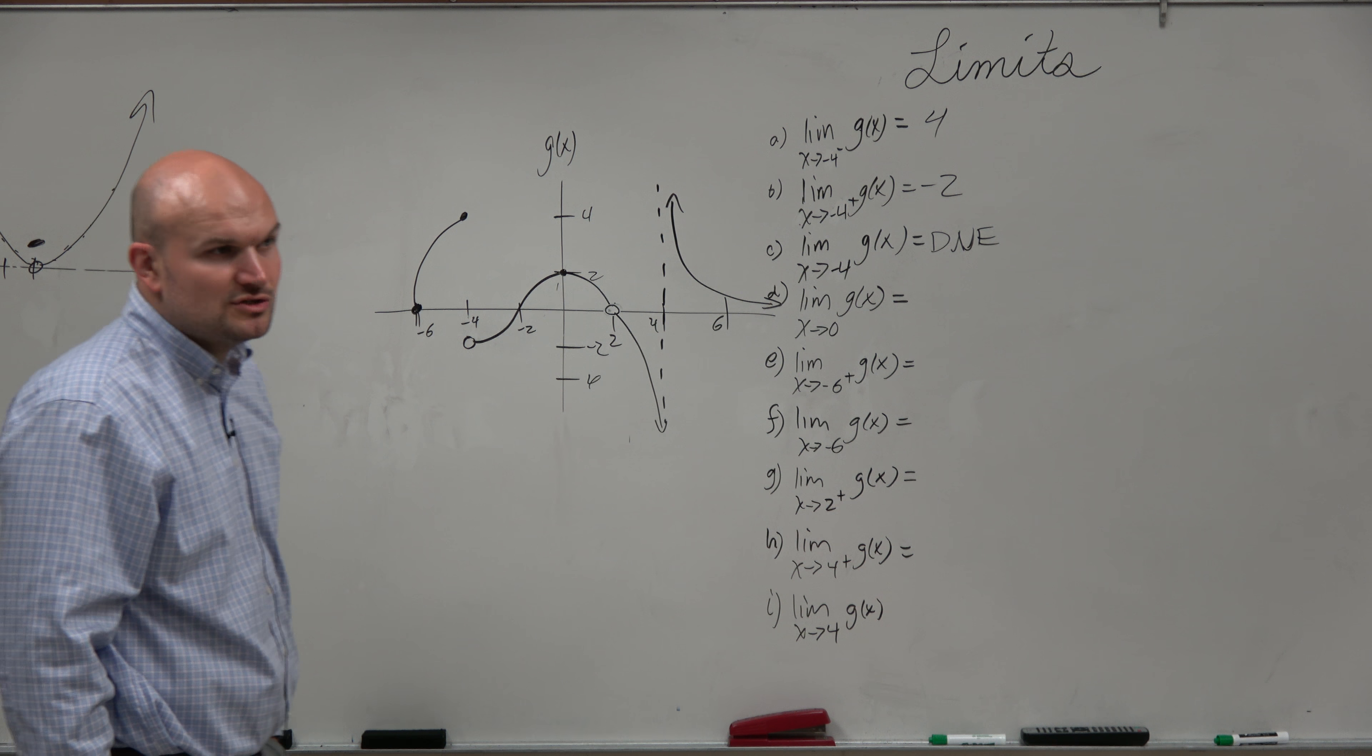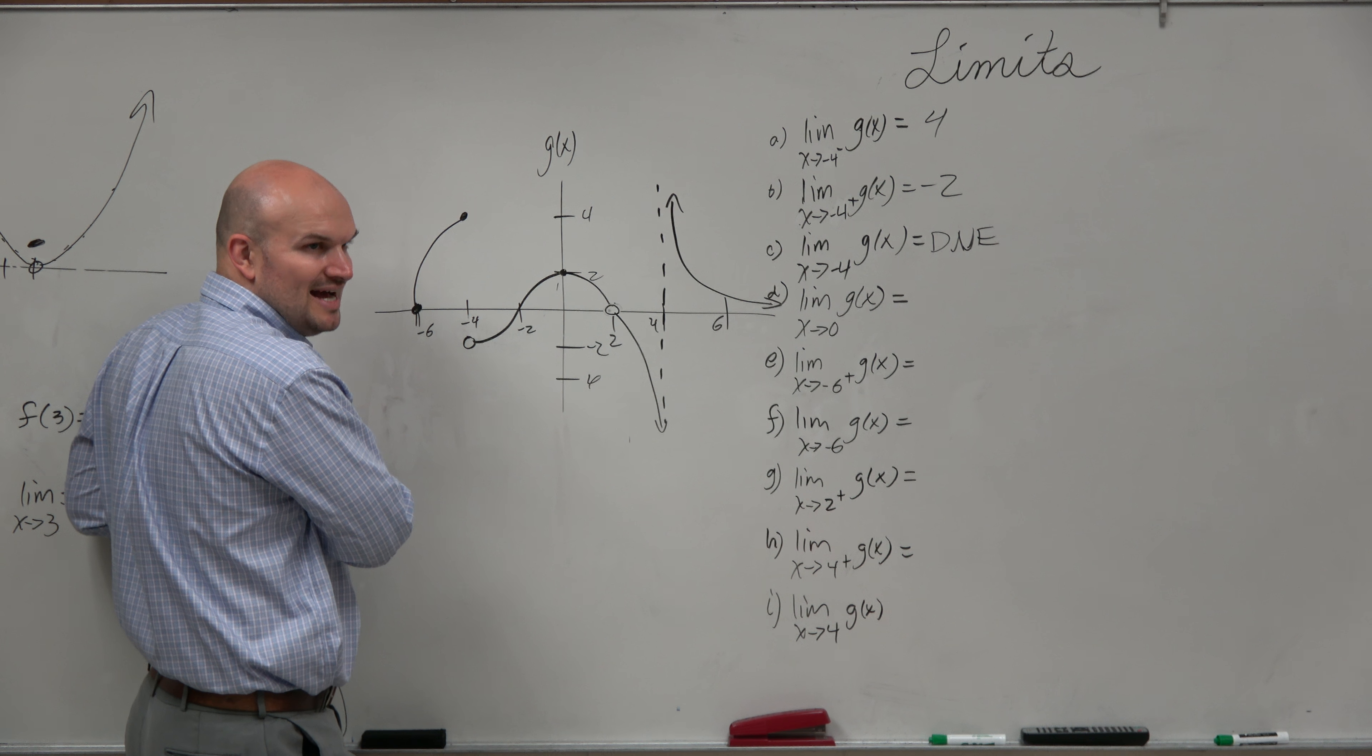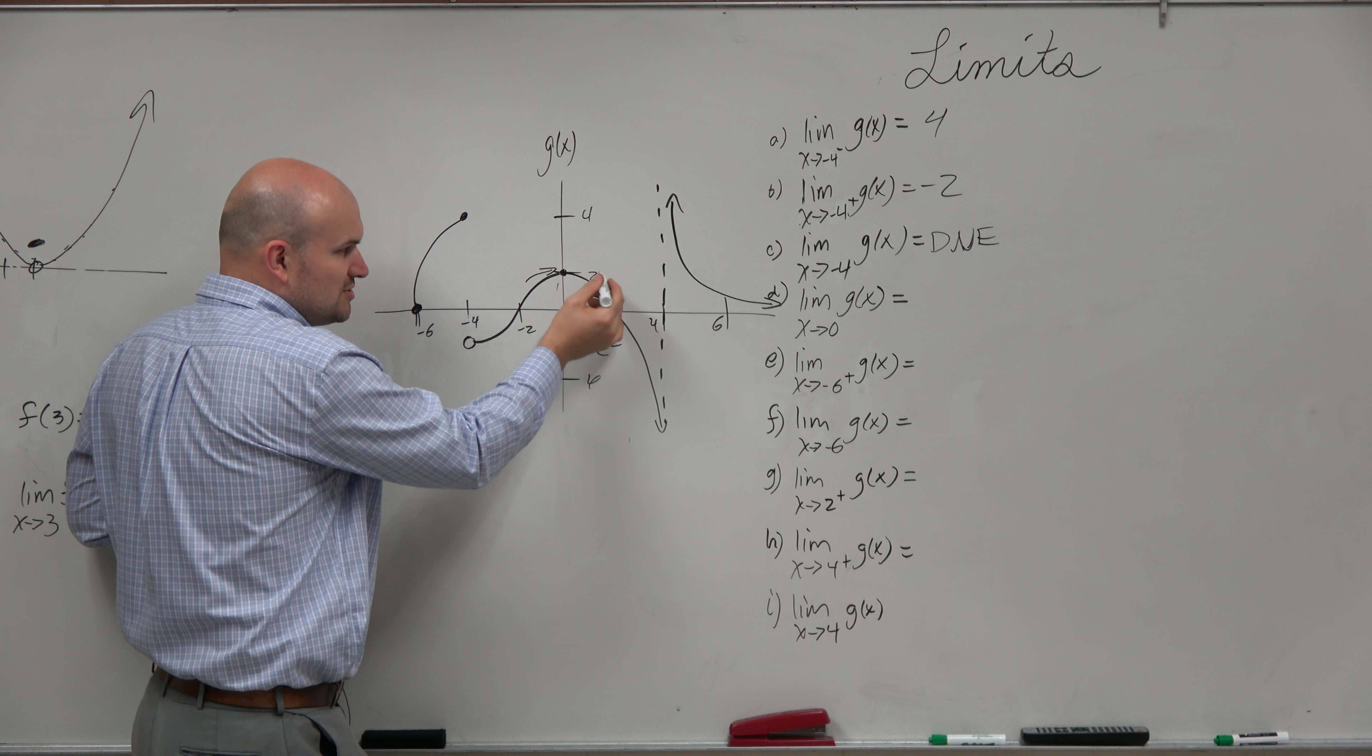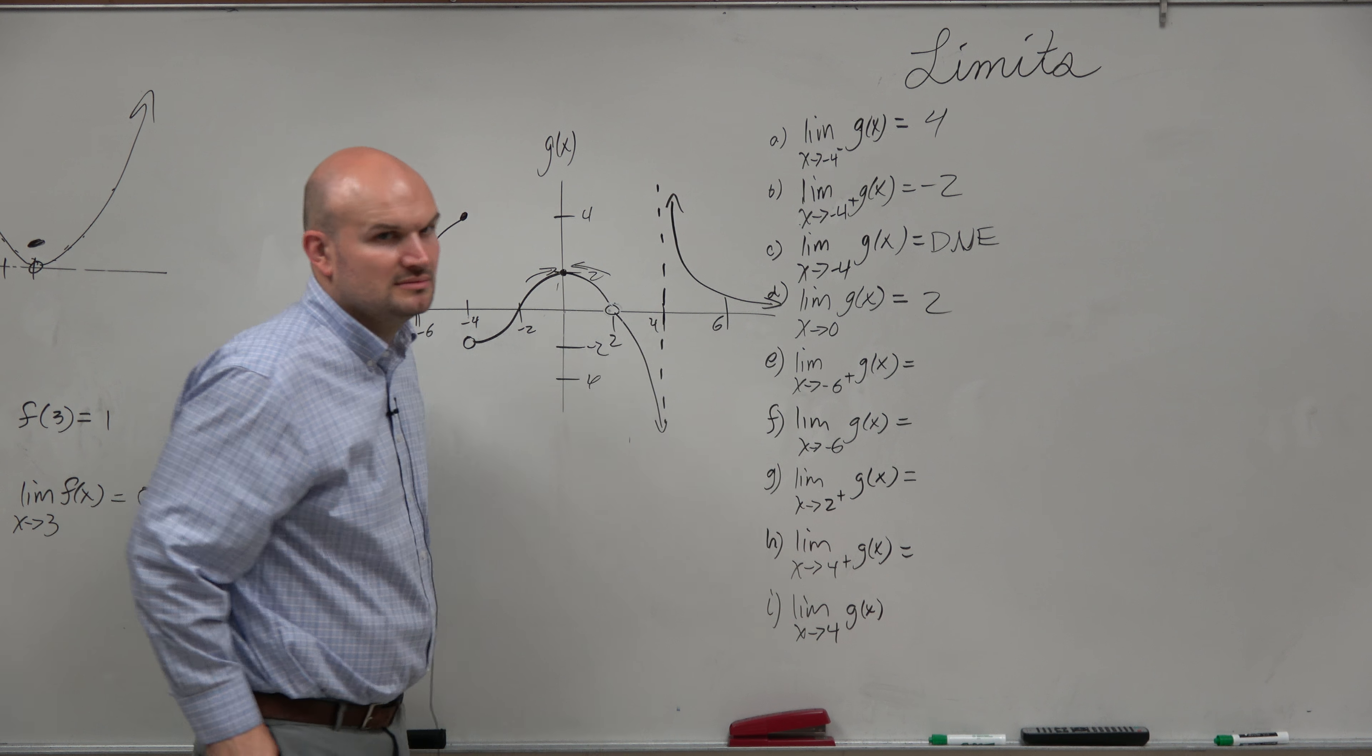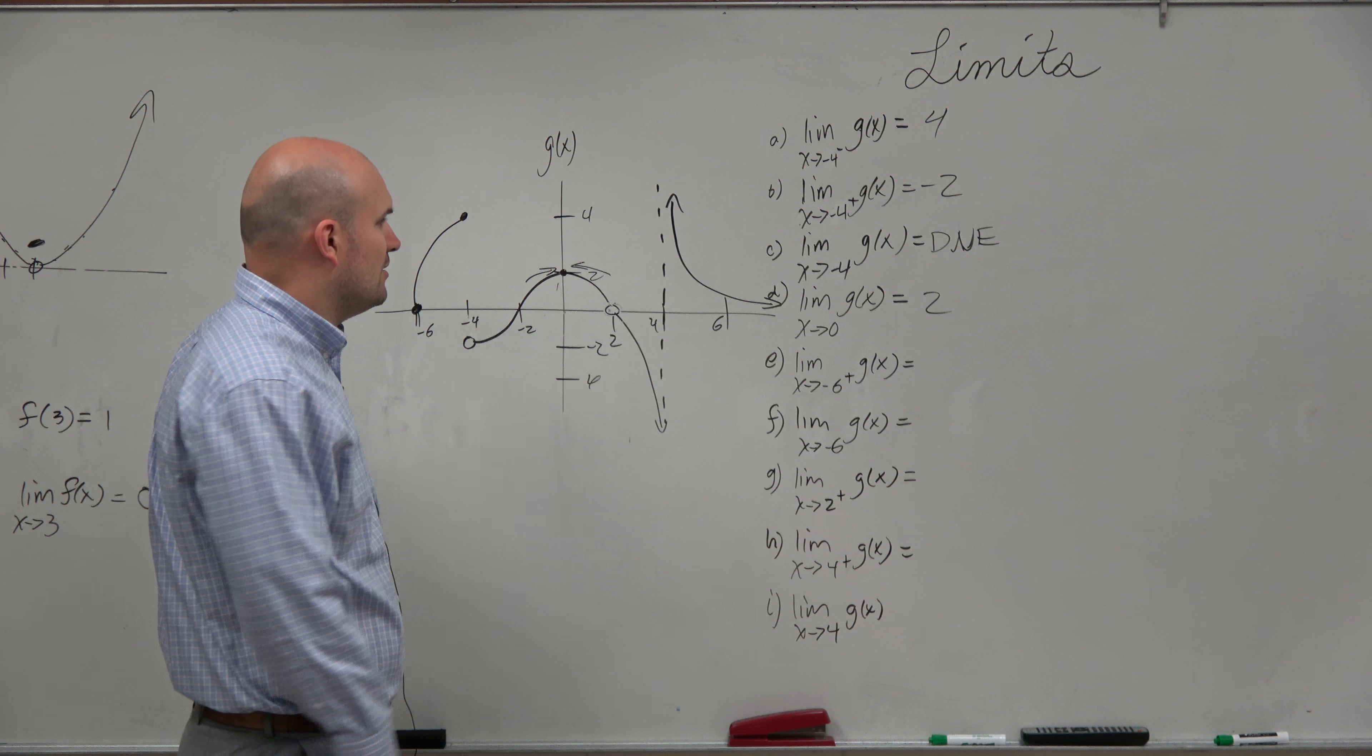The limit as x approaches 0. Sometimes people are like, ah, well guys, limits don't always have to occur at discontinuities. At x equals 0, we have the function is equal to 2. But as you see, as we approach from the left and through the right, what value are we approaching? 2. So it's a little gimme in there. But limits don't always have to approach at discontinuities. They're more likely to approach at discontinuities for algebraic reasons, which we'll see. But they don't always have to go to there.